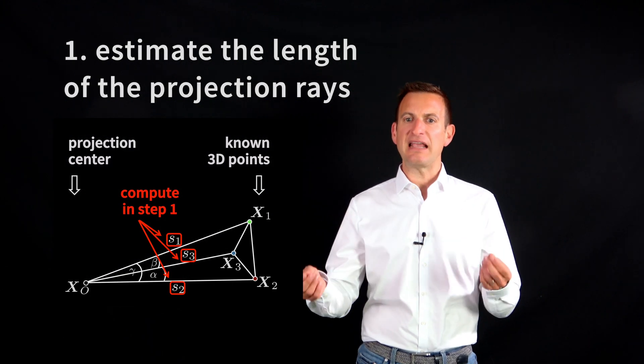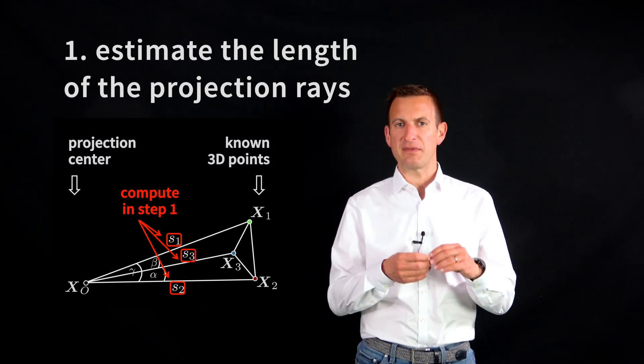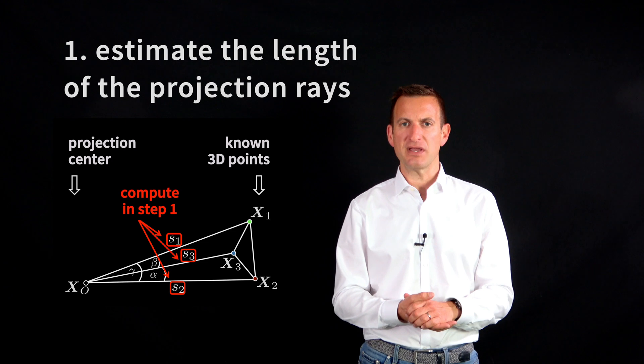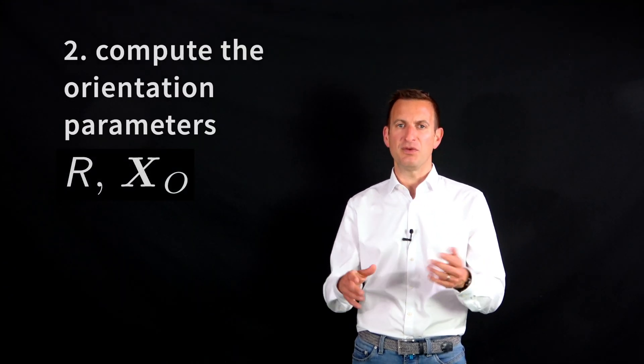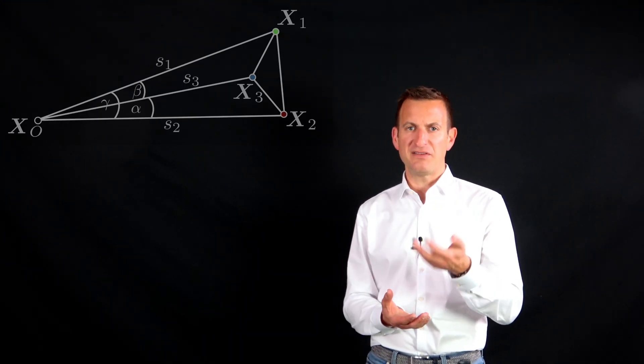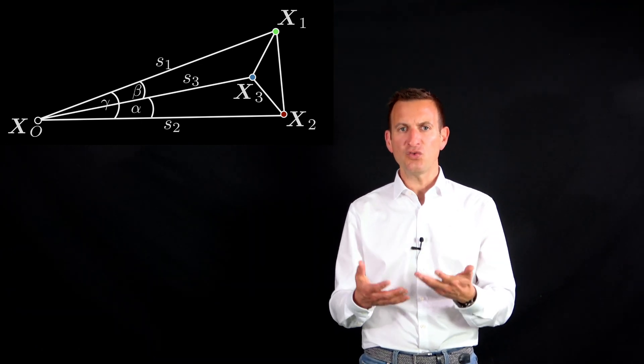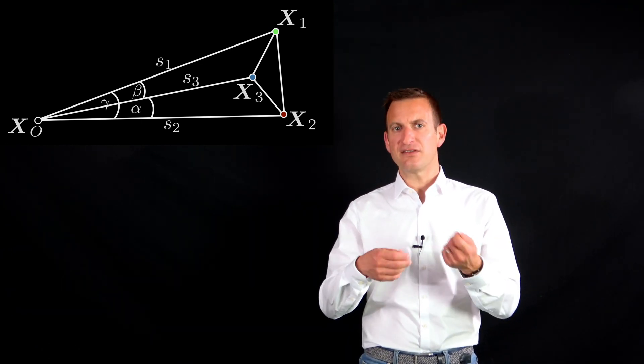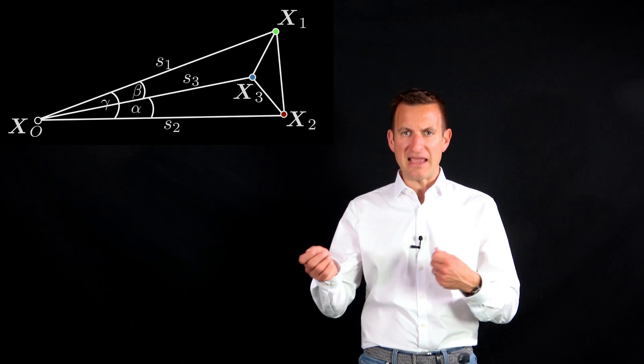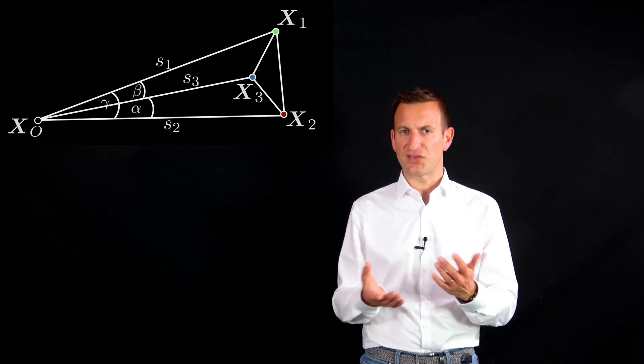The approach is basically a two-step approach. In the first step, we compute the lengths of the projection rays from x0 to x1, x2, x3. In the second step, we compute the orientation parameters. The first step is the key step — we exploit the geometry of those triangles and use cosine relations in order to relate different lengths in the triangle to each other.